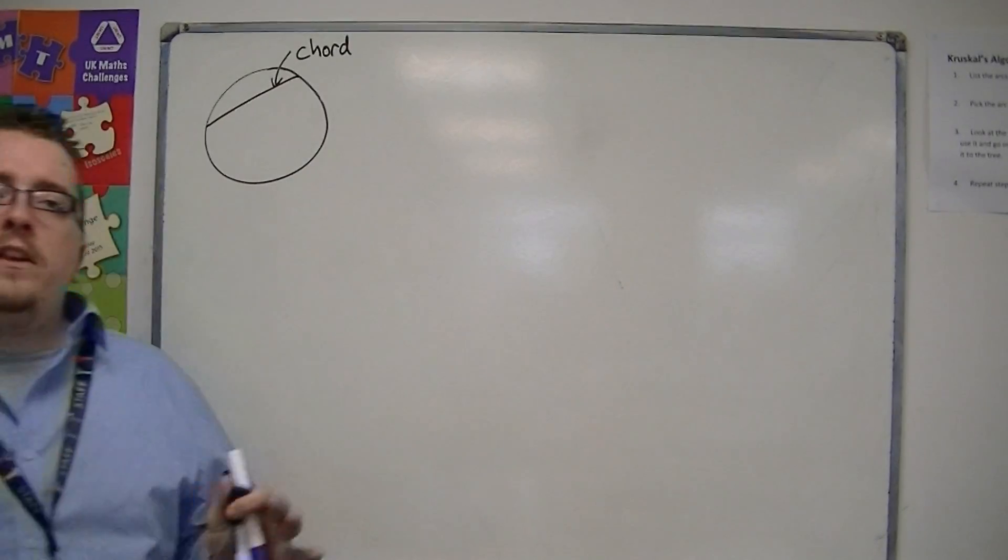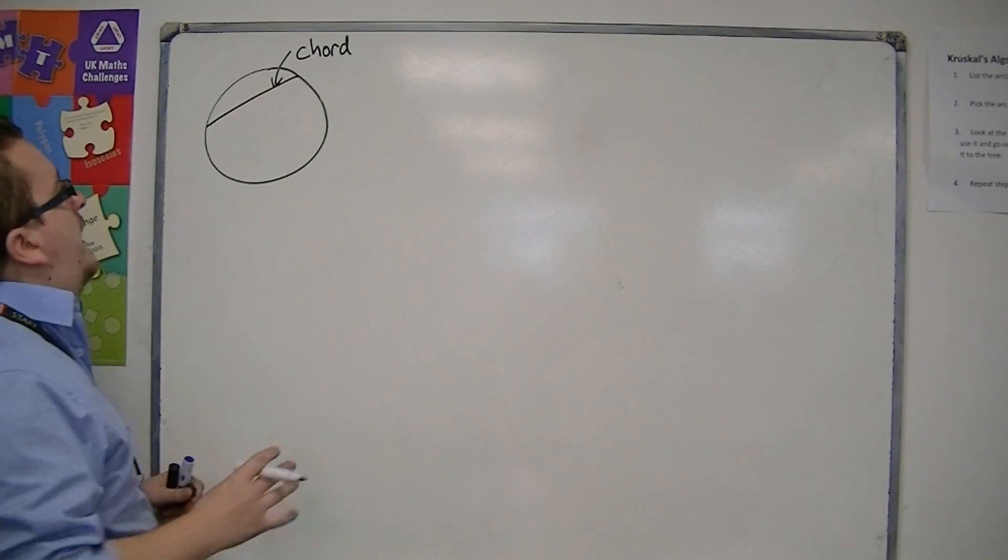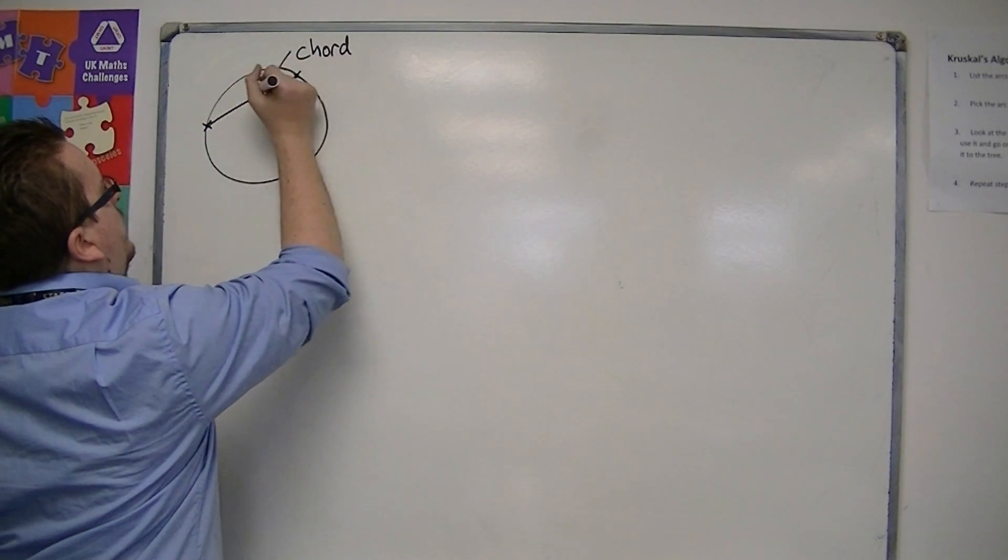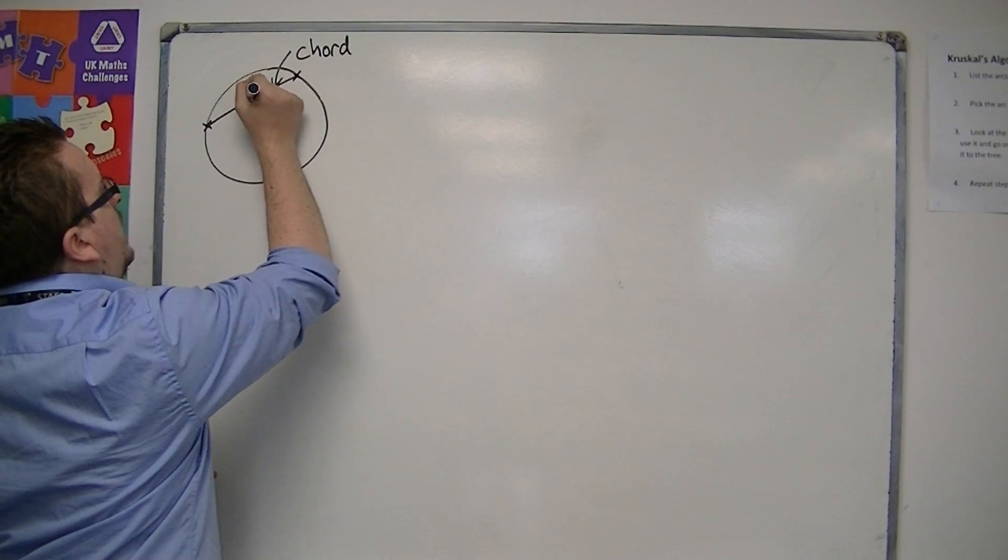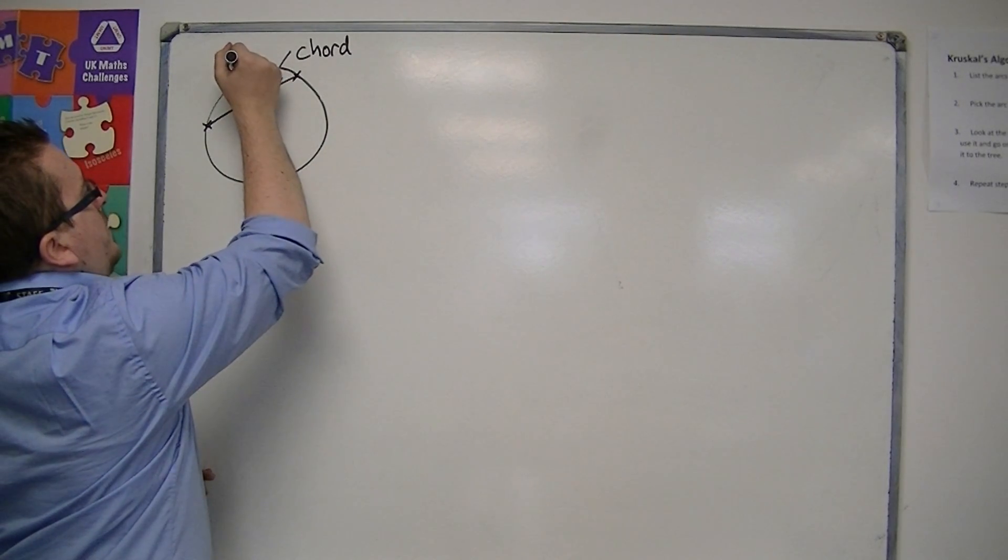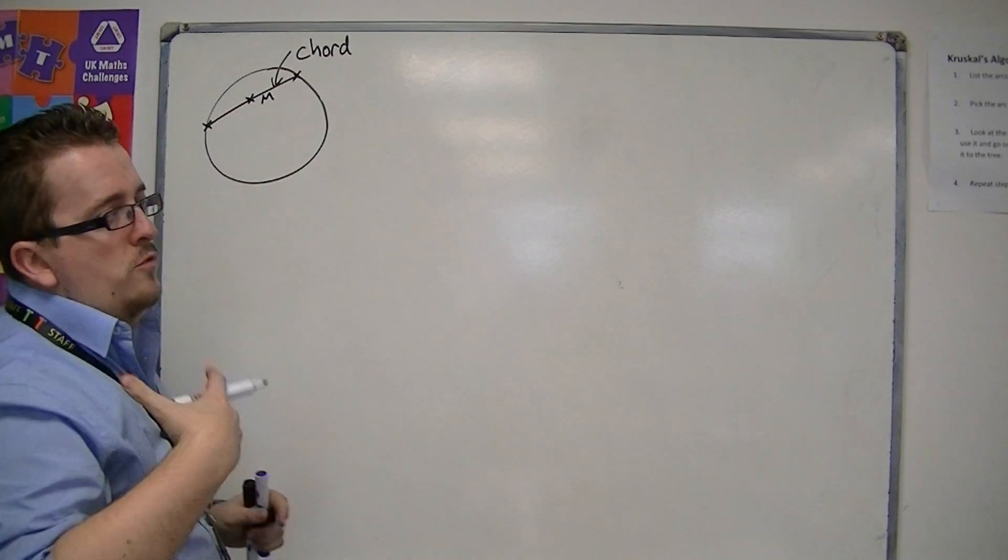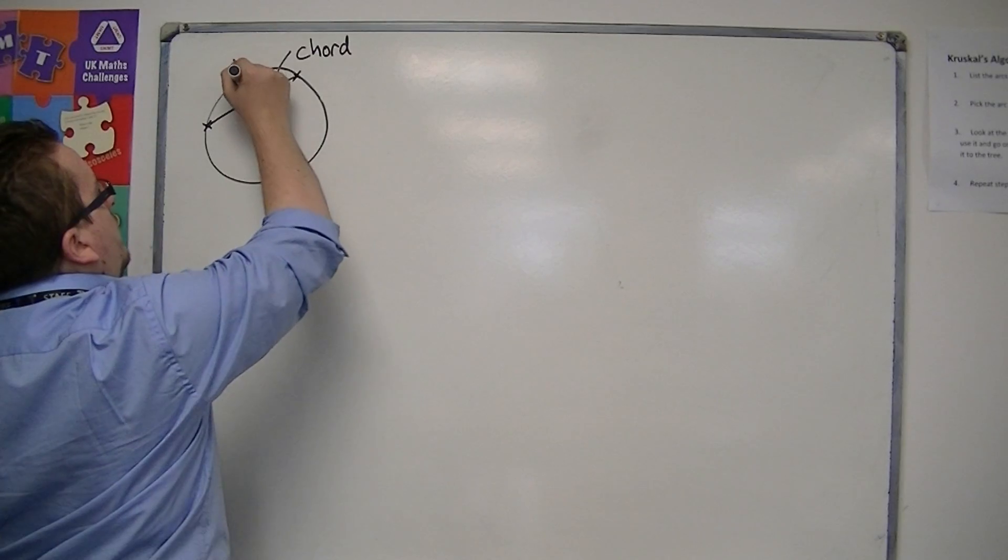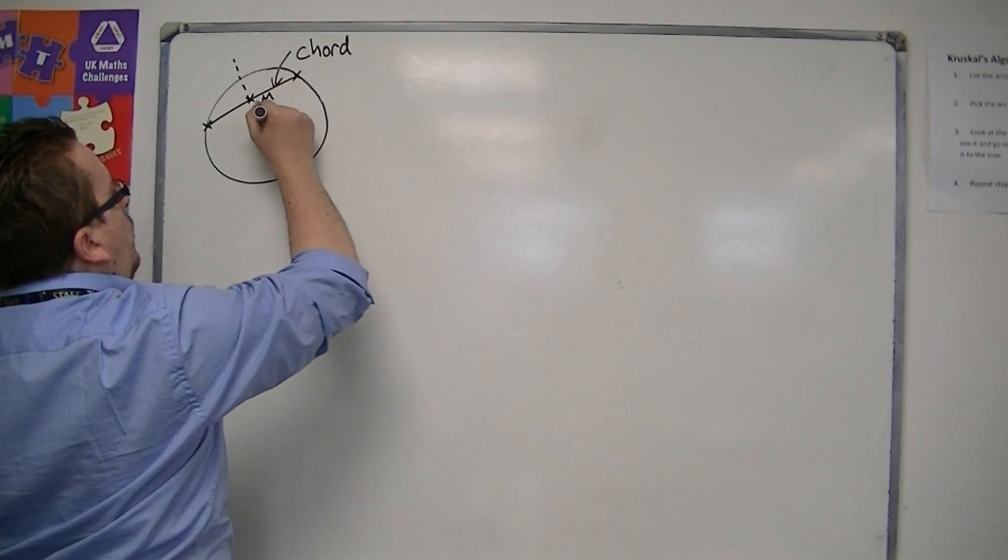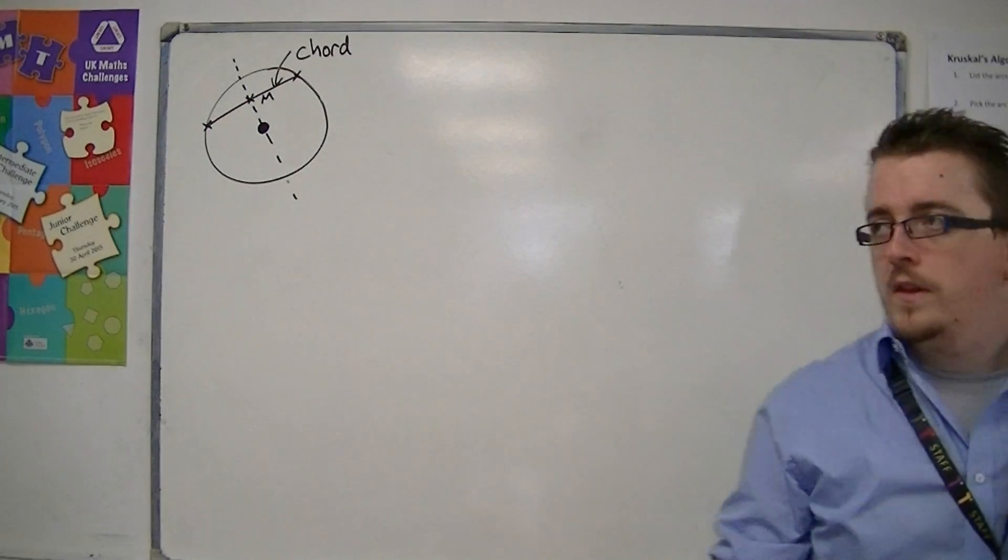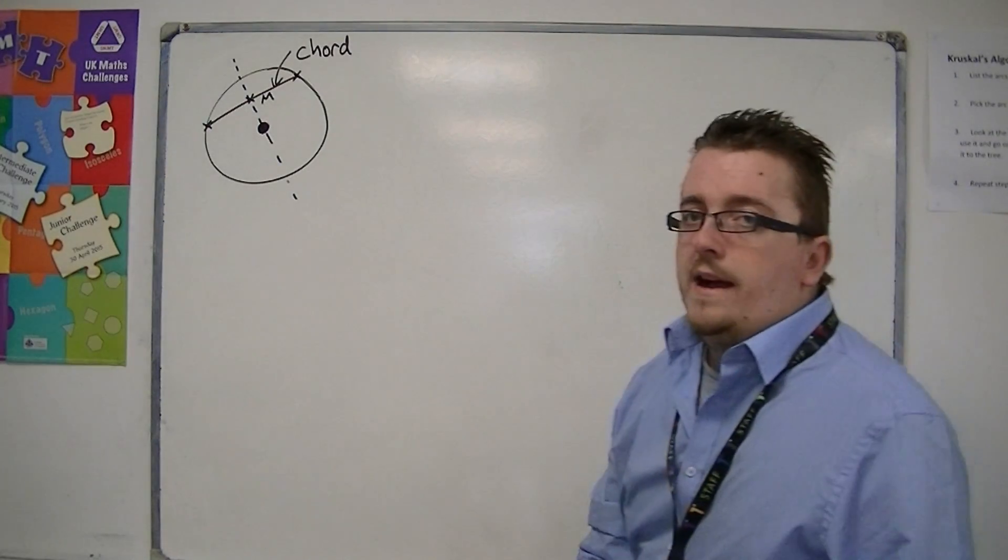Now, the useful bit of information about a chord is that if you find the midpoint between the two endpoints, so let's call that M, then the perpendicular line that travels through M will always travel through the centre of the circle, no matter what chord we have.